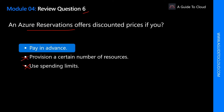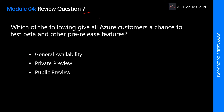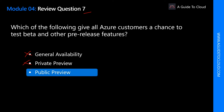You can prepay for one or three years for certain Azure resources like virtual machines, compute, and SQL Database instances. Which of the following gives all Azure customers a chance to test beta and other pre-release features? General Availability is when everyone gets access — not correct. Private Preview is only for selected early adopters. The correct answer is Public Preview, which means an Azure feature is available for all Azure customers for evaluation purposes.